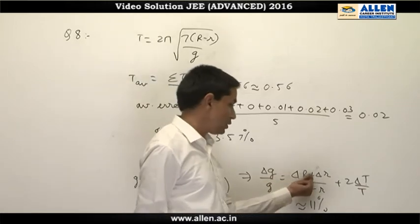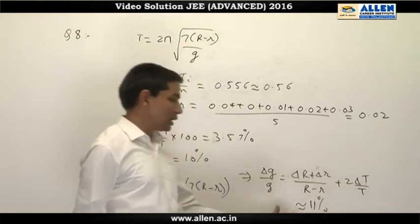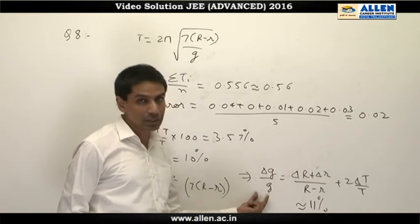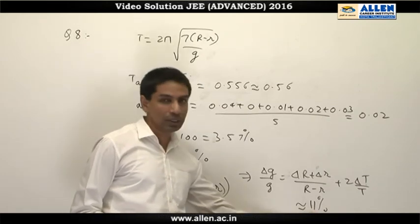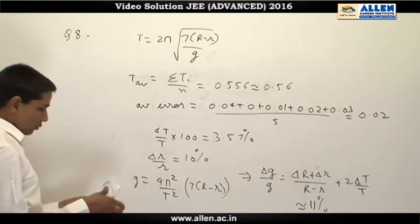The error in g, percentage error in g, is calculated to be delta R plus delta r (because error is always added) divided by (R minus r) plus 2 delta T by T. By calculating that, the percentage error in g is found out to be 11 percent. So the answer is A, B, and D.